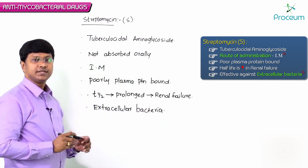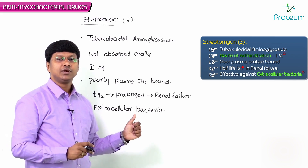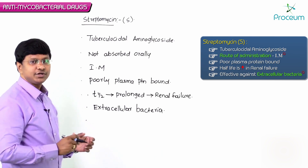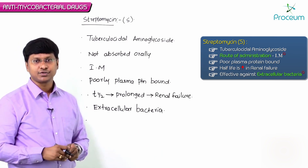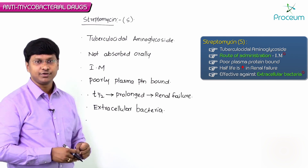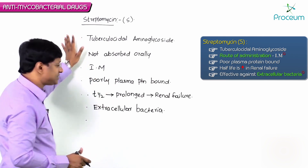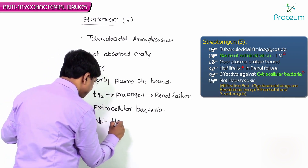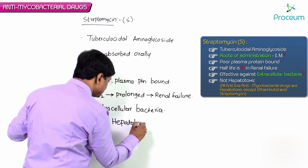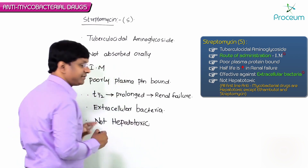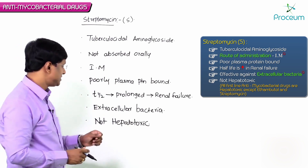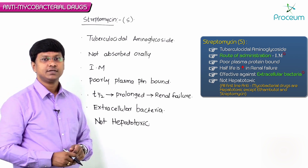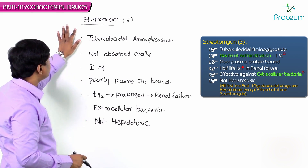Streptomycin is active only against the extracellular bacteria — remember this point. Majority of first-line anti-tubercular drugs are hepatotoxic, except for ethambutol. Streptomycin is also not hepatotoxic. Its other features are similar to that of the aminoglycosides.